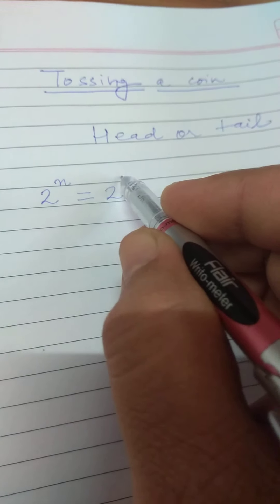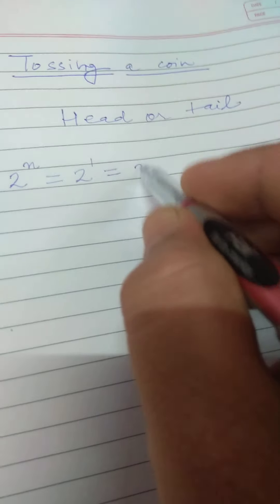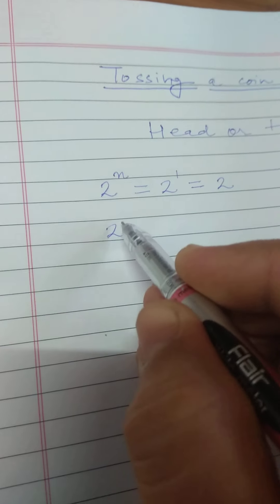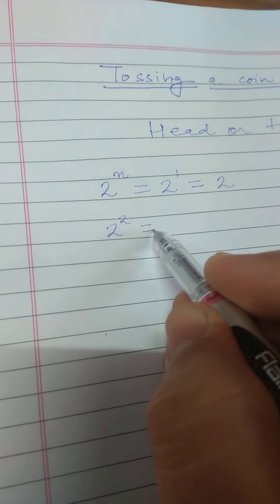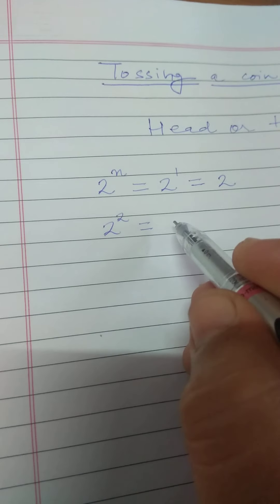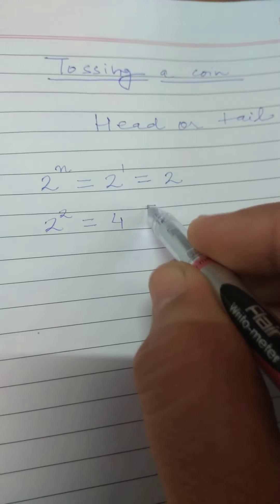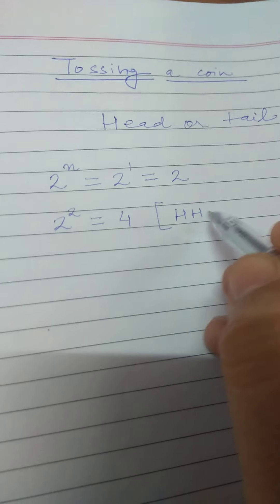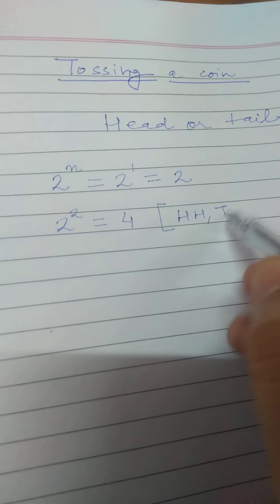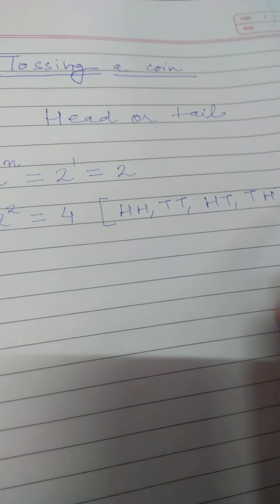If you are taking only a single coin, it will be 2 raised to the power 1, which will be 2, and the two outcomes are head or tail. Now if you are taking two coins and tossing them simultaneously, 2 raised to the power 2, the number of outcomes will be 4, which will be: head-head, tail-tail, head-tail, and tail-head.